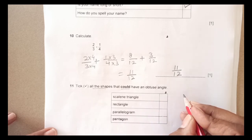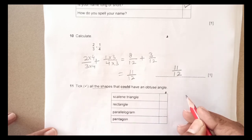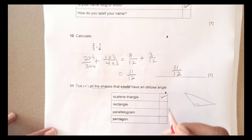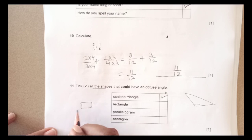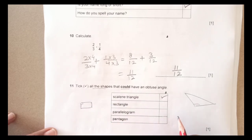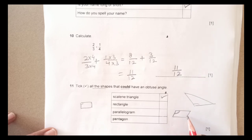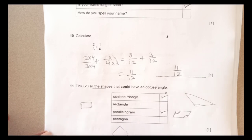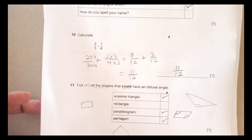Number 11: tick all the shapes that could have an obtuse angle. A scalene triangle has three different sides and may have an obtuse angle. A rectangle has all 90-degree angles, so no obtuse angles. A parallelogram — drawing one shows that two of its angles are obtuse. A pentagon with five sides can also have an obtuse angle. So scalene triangle, parallelogram, and pentagon are the answers.